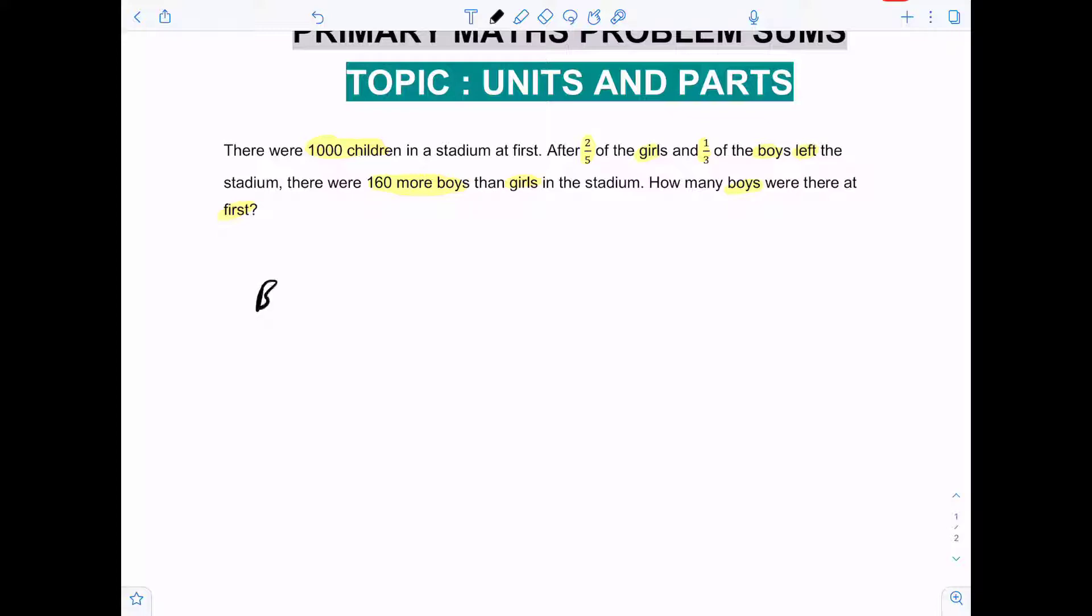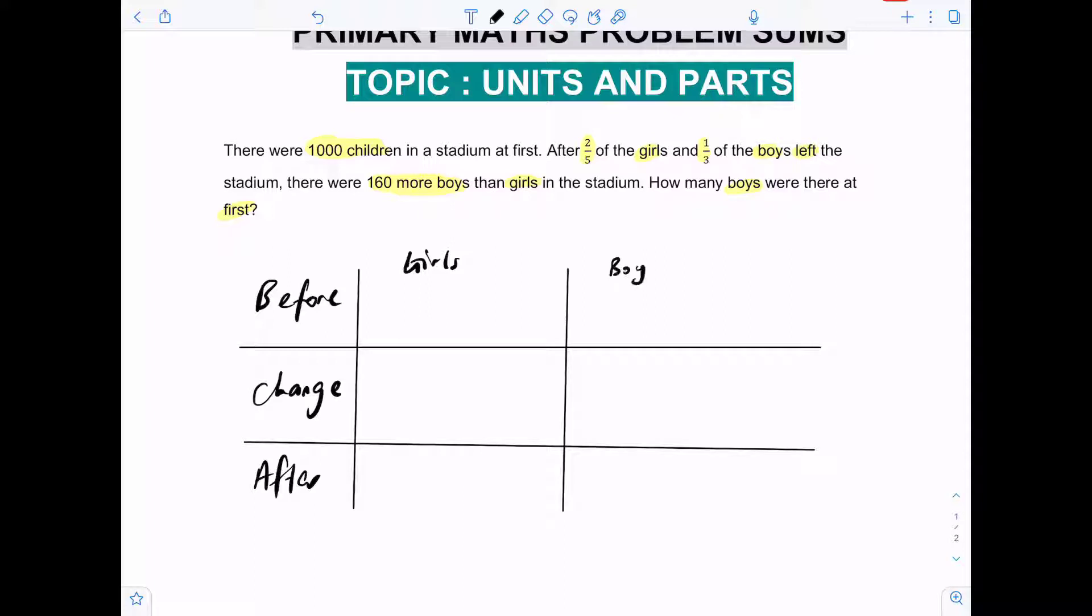If we want to understand the question better, we can draw a before, change, and after table. We have the girls here first, and then we have the boys next. For the girls, we assign five units; for the boys, three parts.